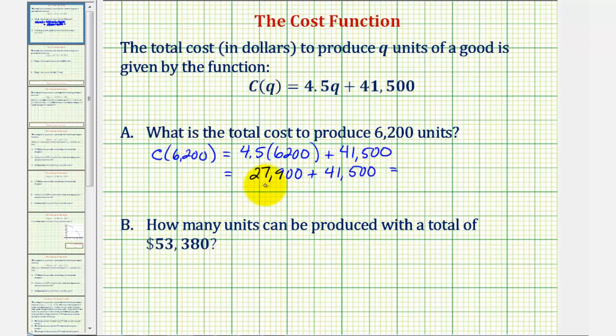And 27,900 plus 41,500 is equal to 69,400. Which means the total cost to produce 6,200 units is $69,400.